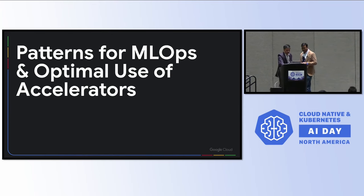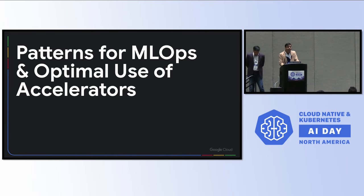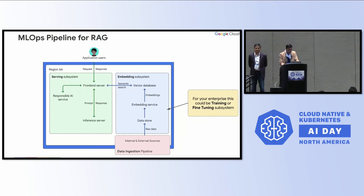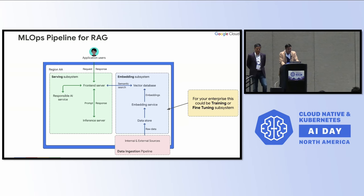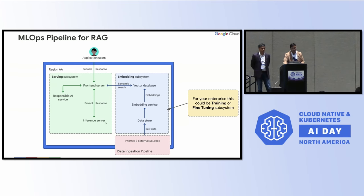Now let's look at some patterns for MLOps and optimal use of accelerators. The first is the MLOps pipeline for RAG. This architecture diagram has a service subsystem with your front end, a responsive AI system, an inference system, connected to an embedding system via a vector database, with a data ingestion pipeline. Once the data ingestion pipeline feeds into the embedding system, it is able to get results back as MLOps.